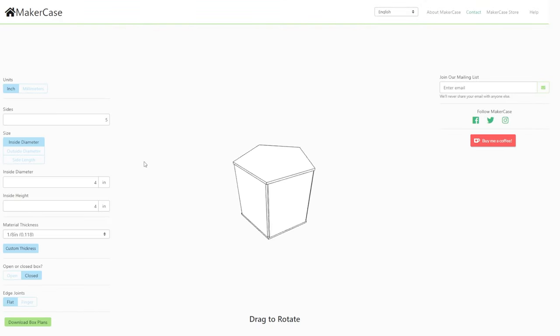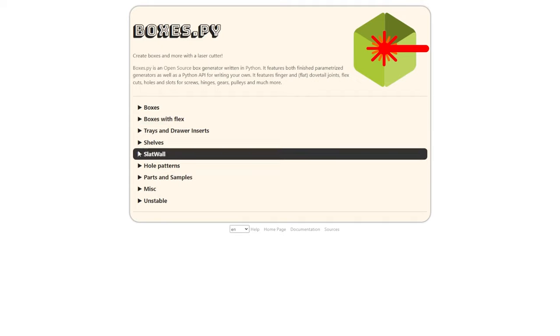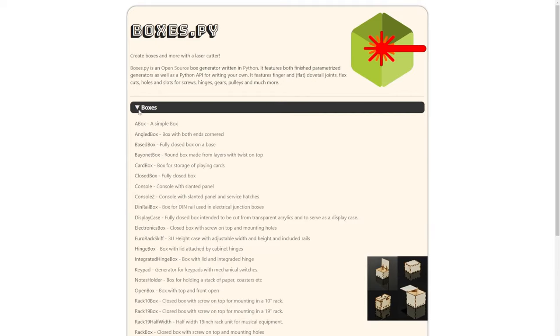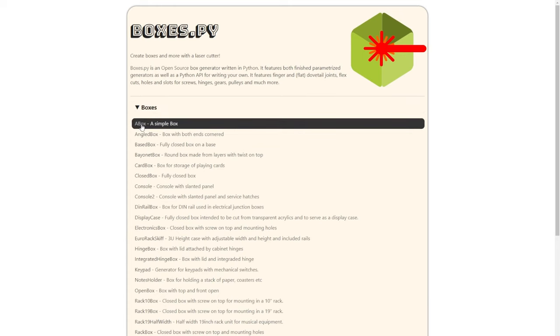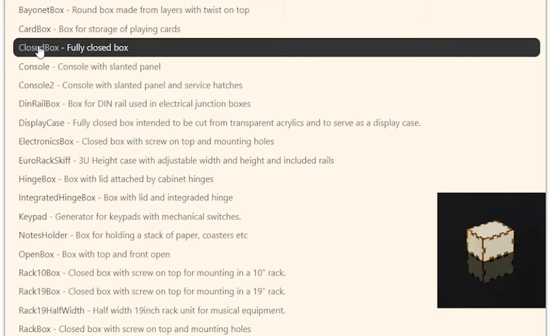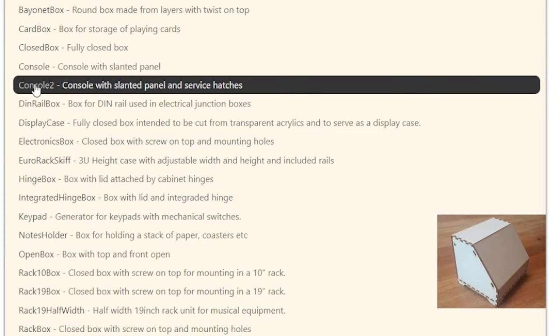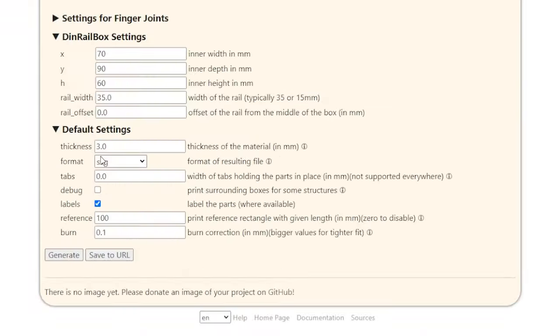We've been fans of MakerCase.com for a while for making parametric laser cut box designs, but I just discovered Boxes.py by Florian Festi. This is a whole collection of parametric design generators, including boxes, enclosures, hinge designs, tool holders, shelves, and a whole lot more. Each design has a number of settable parameters, different allowances for material thickness, and laser kerf. If you have access to a laser cutter, check it out.